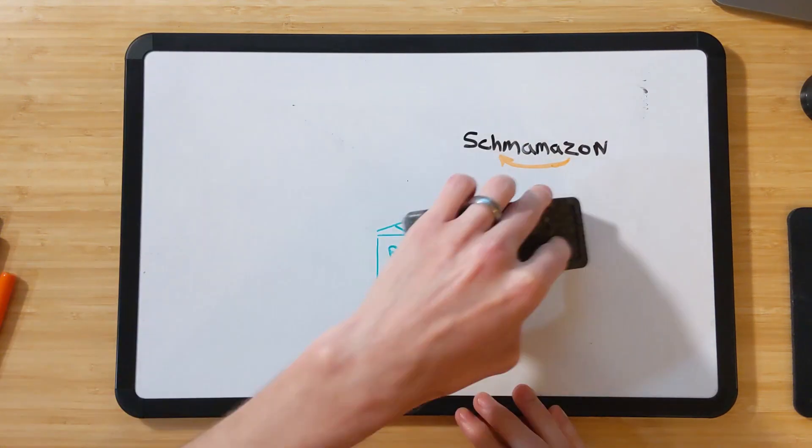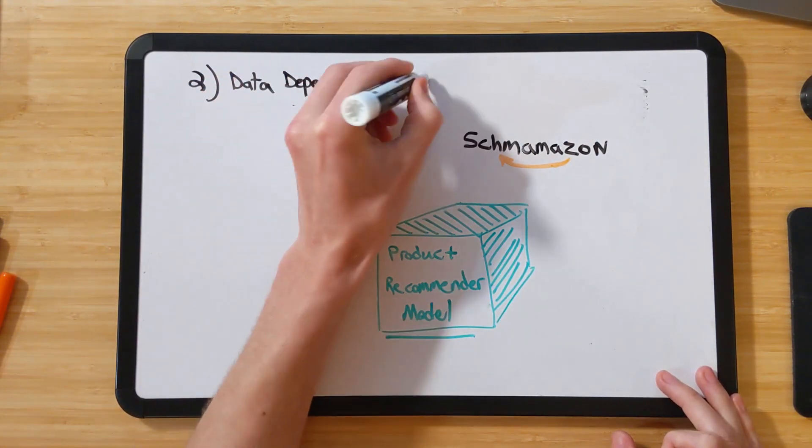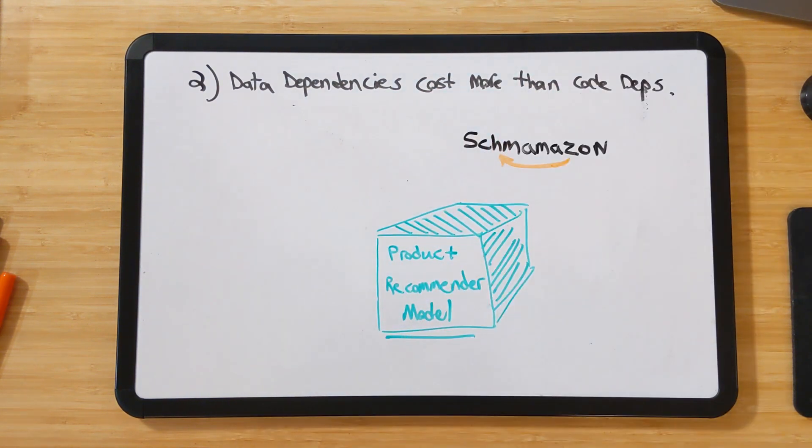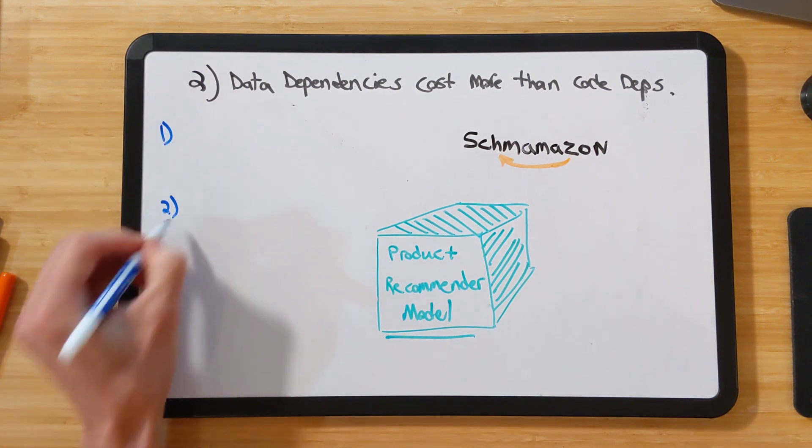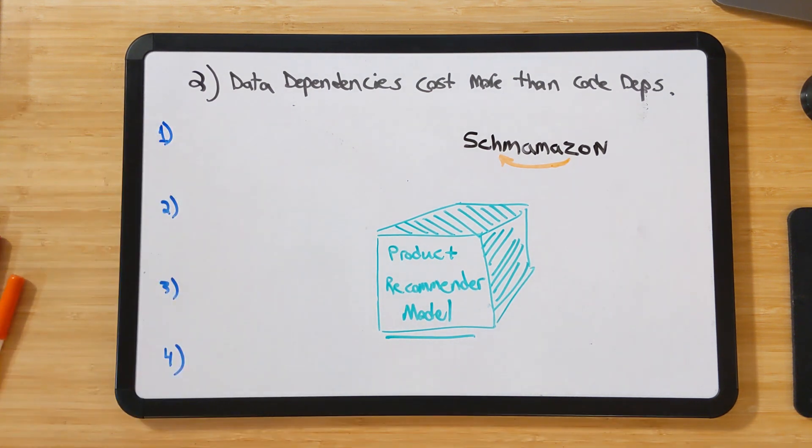This data dependency web leads into the second driver for hidden technical debt of machine learning systems, and that is that data dependencies cost more than code dependencies. Let's examine a few of those data dependencies within the context of our hypothetical product recommendation system.